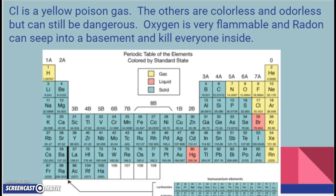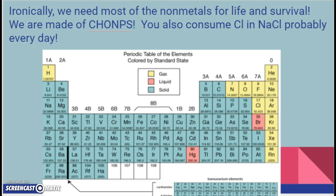Even though a lot of these non-metal gases are bad, poisonous, and dangerous, ironically we need most of the non-metals for life and survival. We are made of CHOMPS: carbon, hydrogen, oxygen, nitrogen, phosphorus, and sulfur. So even though chlorine is a poisonous gas, you consume chlorine every day in NaCl, which is table salt.